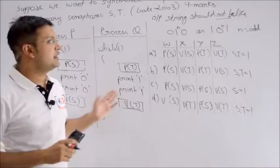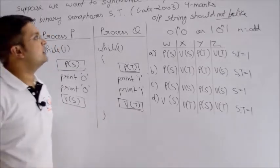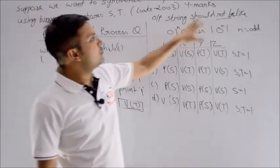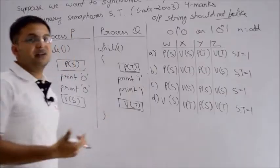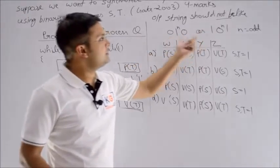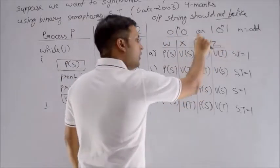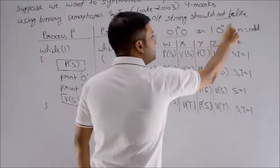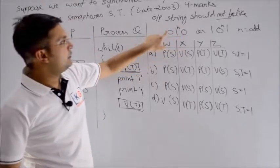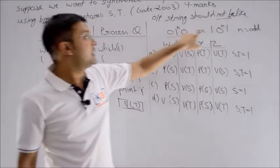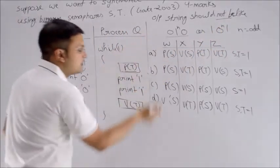This time the question is slightly changed. It says the output string should NOT be like this. Two things you need to keep in mind: first, it's saying this string should NOT happen. The string pattern it doesn't want is 0, 1, 0, and 1 raised to power n where n is odd, or 1, 0, 1, and 0 raised to power n where n is odd. It means starting and ending with 0, you cannot have odd number of 1s in between. Starting and ending with 1, you cannot have odd number of 0s.